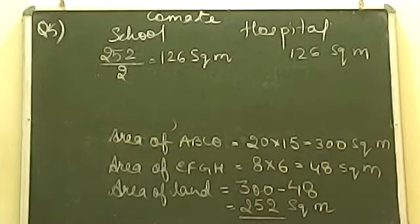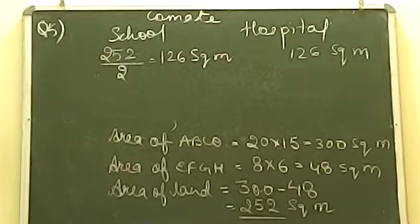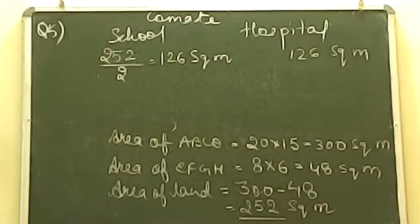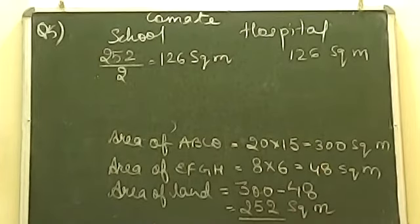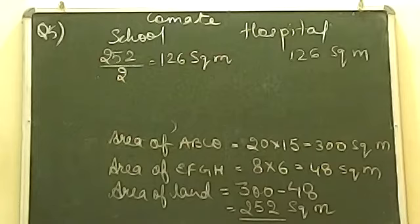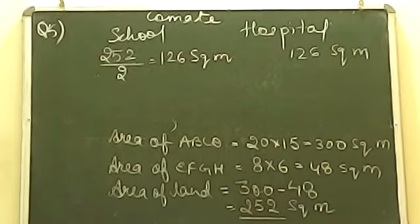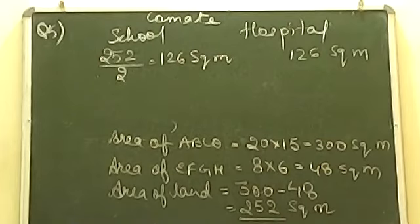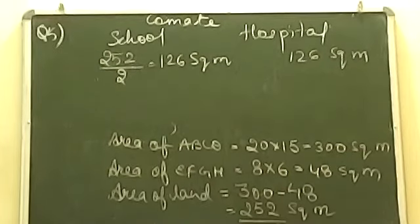Last MCQ: a rectangle has perimeter 72 meters and the length is thrice its breadth. Find its breadth. This question needs algebra. I want you all to open your maths copy and note down this question. Let us do the solution and then complete the more challenging part.